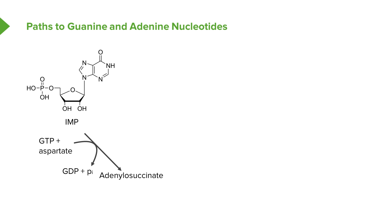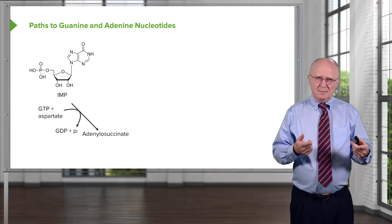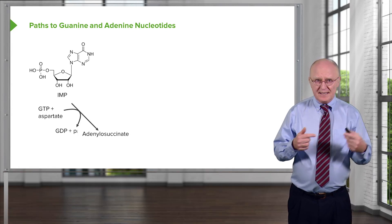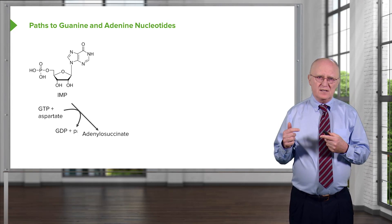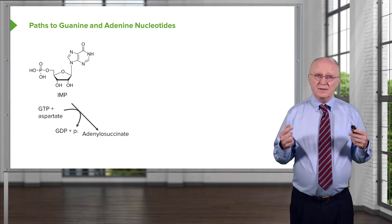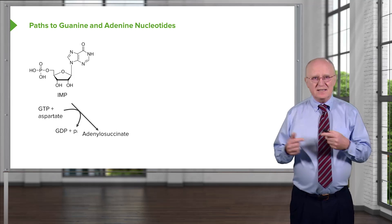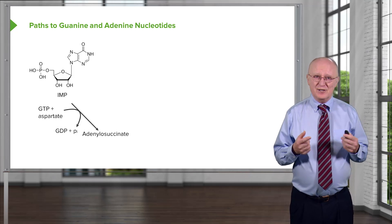Now that energy source might seem a little odd — we see GTP instead of ATP. Why is that the case? The reason is because GTP is a guanosine nucleotide and the cell is trying to make adenosine nucleotides. And if the cell is trying to make adenosine nucleotides, in all likelihood it doesn't have enough. So it couldn't use ATP to make adenosine nucleotides — it uses the other purine, GTP, as its energy source.